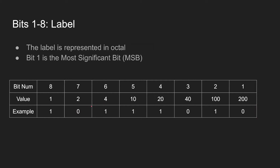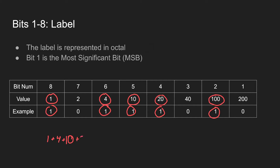I'll show a quick example. So let's say this is the label we receive. Looking at the ones, we have a 1 in the 1 position, 1 in the 4 position, 1 in the 10 position, 1 in the 20 position, and 1 in the 100 position. We add together their values: 1 plus 4 plus 10 plus 20 plus 100, which equals 135. And that's the label we'll use to identify whatever information comes after this on the frame.